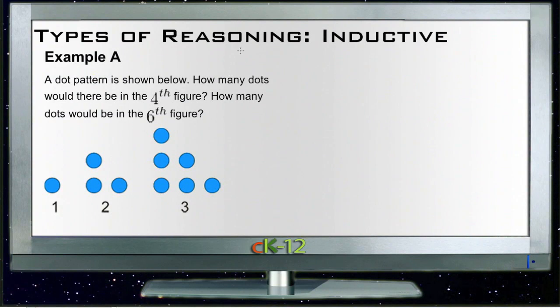All right, let's take a look at the examples in types of reasoning: inductive. Example A says a dot pattern is shown below. How many dots would there be in the fourth figure and how many dots would there be in the sixth figure? Well, if we take a look at the pictures we have here...